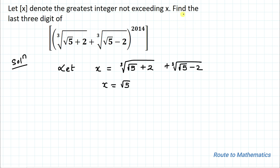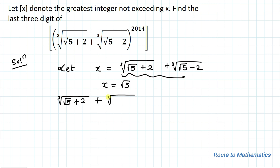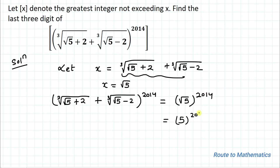So we have x = √5. We are asked to find the last 3 digits of the given expression. So (∛(√5+2) + ∛(√5-2))^2014 = (√5)^2014 = 5^(2014/2) = 5^1007.